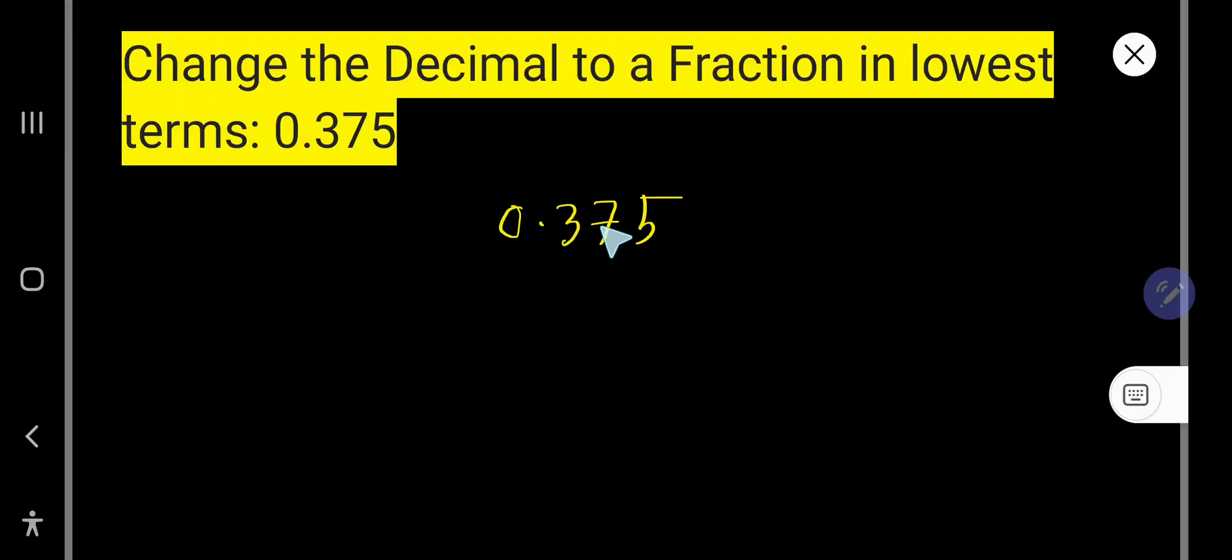Change the decimal to a fraction in lowest terms: 0.375. This is a decimal number and we would like to convert this decimal number to a fraction.